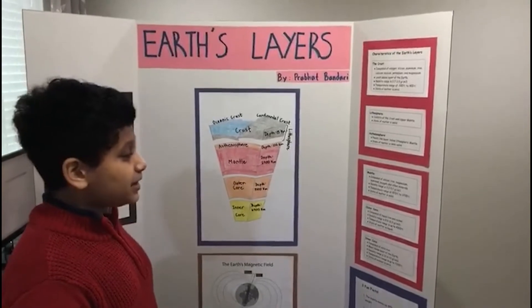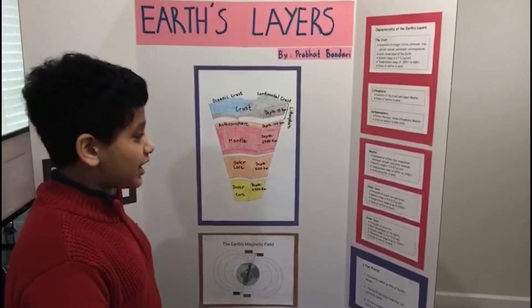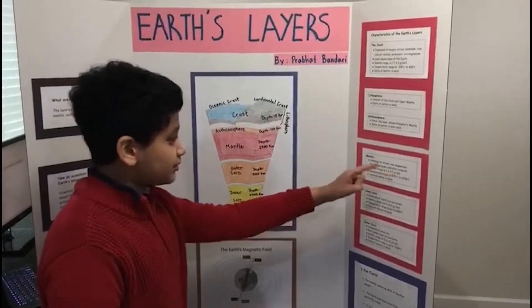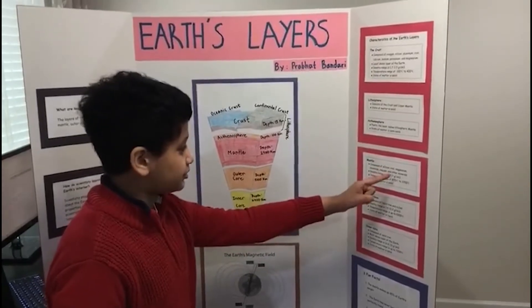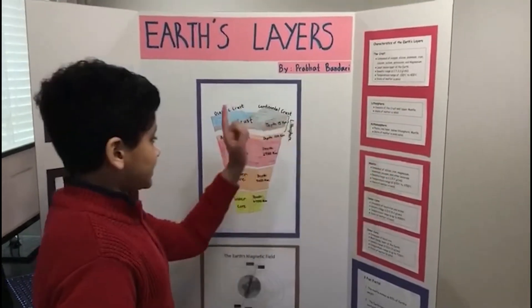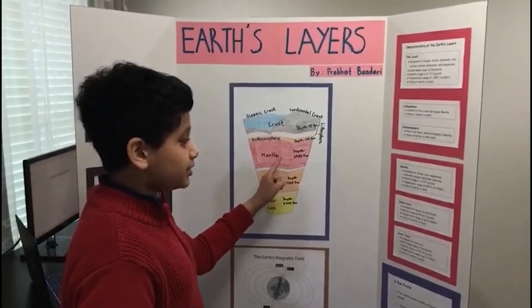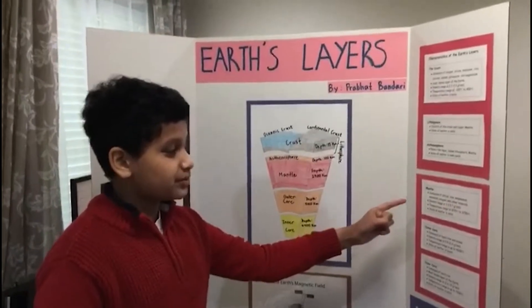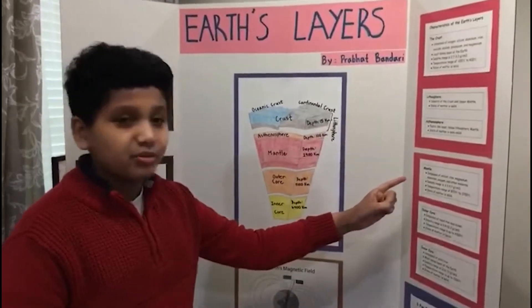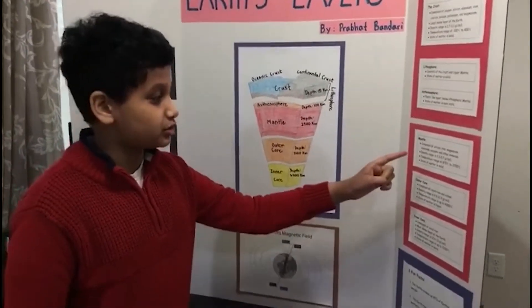The mantle is composed of silicon, iron, magnesia, aluminum, oxygen, and other minerals. It has a depth of 2,900 kilometers and its density range is 3.3 to 5.7 grams per centimeters cubed.